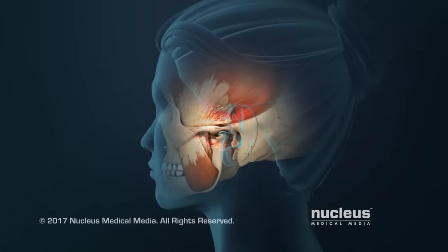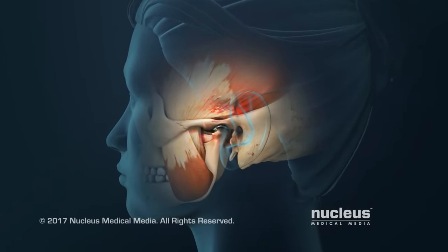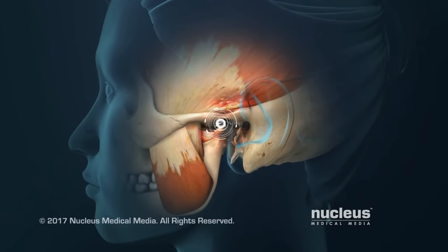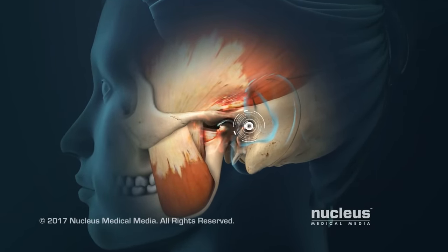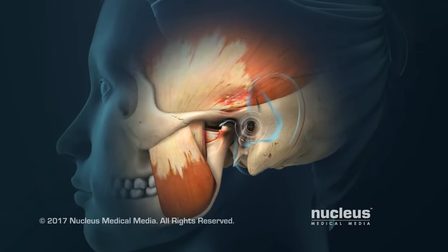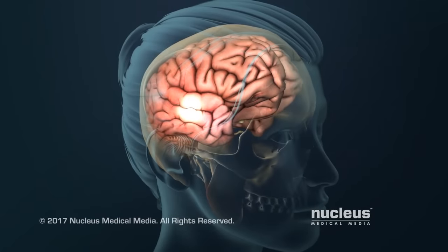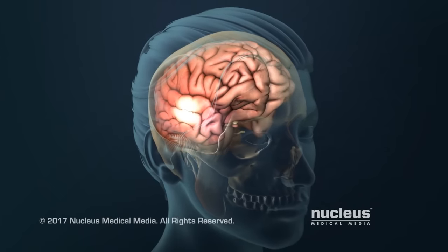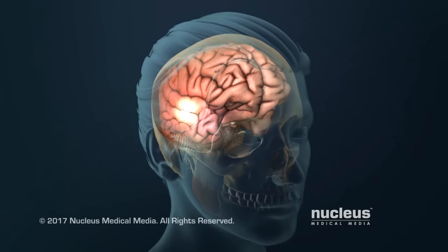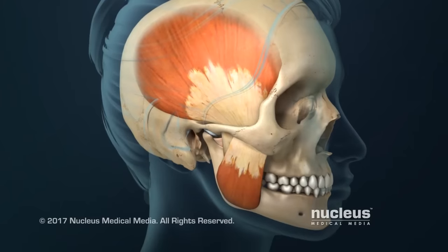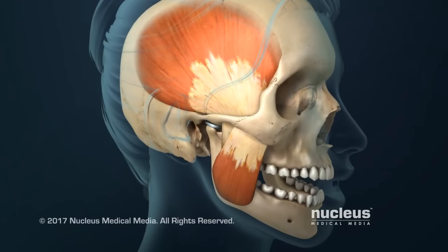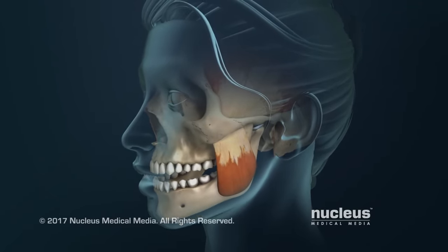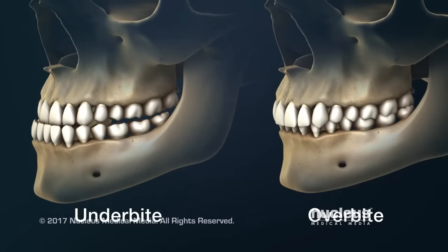The most common symptom of TMJ disorders is pain in the joint and nearby muscles. Sometimes pain in the TMJ is mistaken for an earache because the ear is so close to the joint. Headaches can result from pain that starts in the muscles around your jaw and temple area. Other symptoms include problems moving your jaw, painful clicking when you open or close your mouth, and changes in the way your teeth meet.